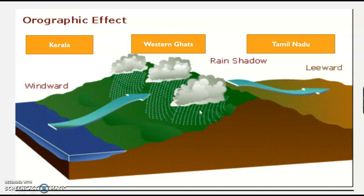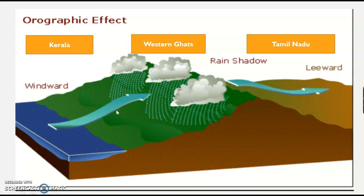Why Tamil Nadu gets very less rainfall is a common question. Simply, the clouds coming from the Arabian Sea have to cross the Western Ghats, which is a continuous mountain range. While crossing it, the clouds get weakened and pour heavy rain on the windward side. The weak clouds then cross towards Tamil Nadu. Since the clouds do not cross freely, Tamil Nadu gets very little rain. The cloud is on the leeward side, dealing with the rain shadow effect.